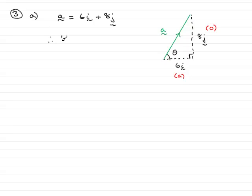Therefore we have that the tan of theta is equal to the opposite side over the adjacent side. So that's 8 units over 6 units. So theta would be equal to the inverse tan of 8 over 6.